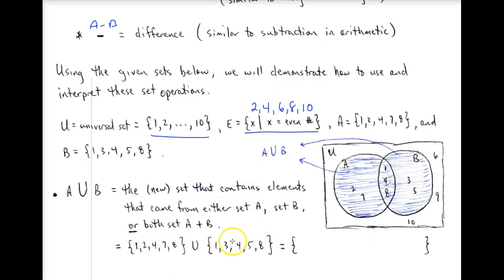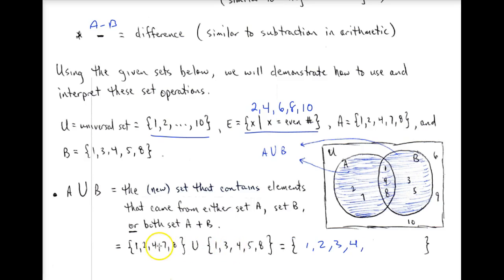To form A union B, we look at both sets and say: as long as we see that element in one of the two, we write it in a new set. From A we see 1, 2; we don't see 3 in A but we do see it in B; we see 4 in A; we don't see 5 in A but we do in B; neither set has 6; we have 7 in A; and 8 appears in both, so we write it once. So A union B is {1, 2, 3, 4, 5, 7, 8}, which is how it looks in the Venn diagram.